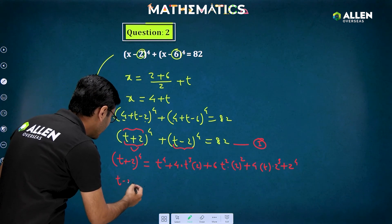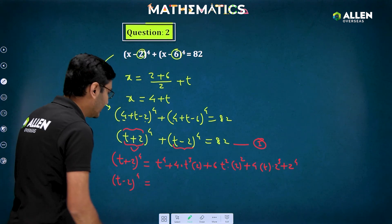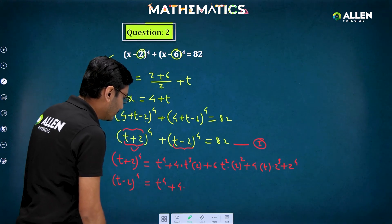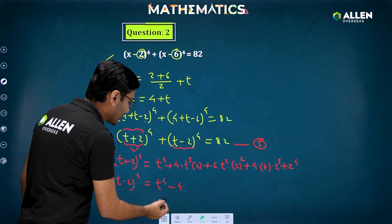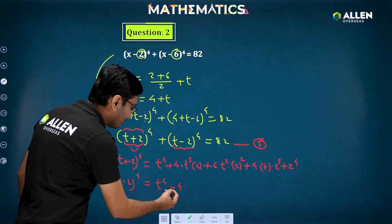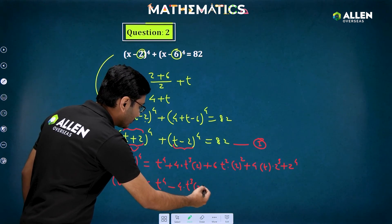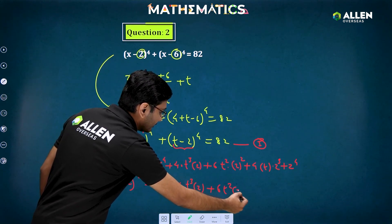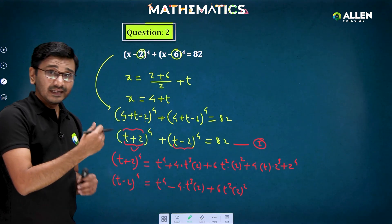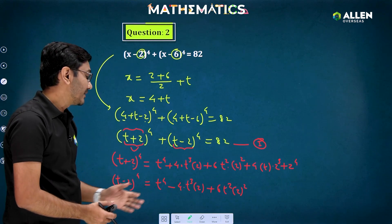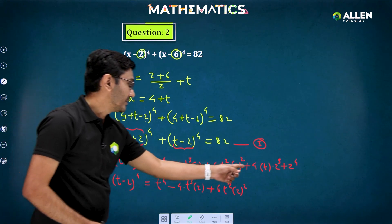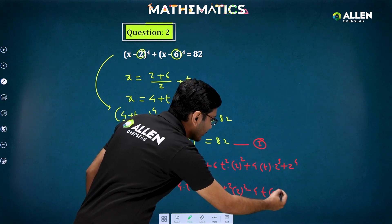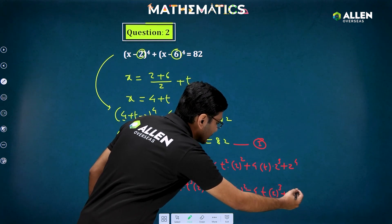Similarly, expanding (t - 2)⁴ gives: t⁴ - 4·t³·2 + 6·t²·4 - 4·t·8 + 16, that is t⁴ - 8t³ + 24t² - 32t + 16. Using the binomial theorem with alternating plus-minus signs for the minus case.